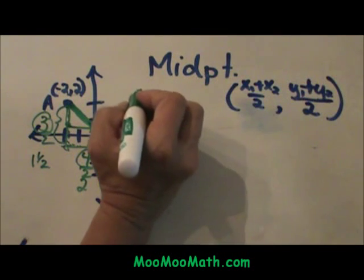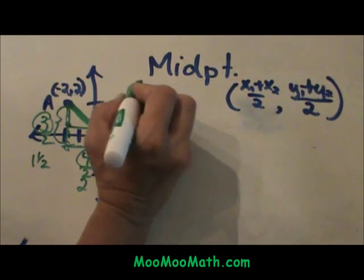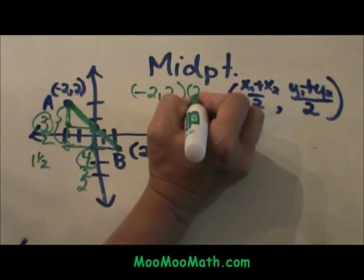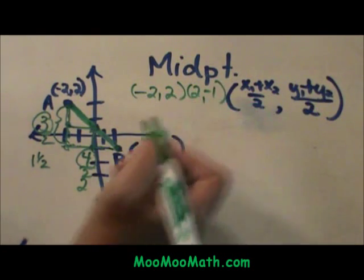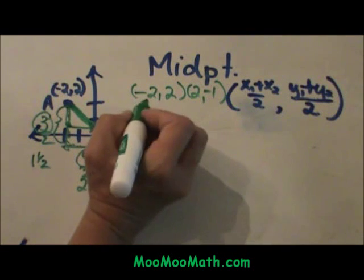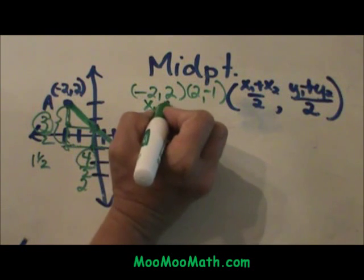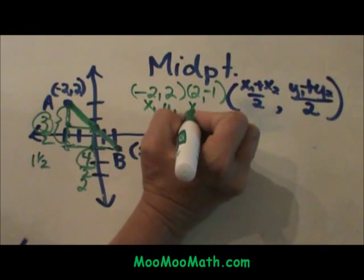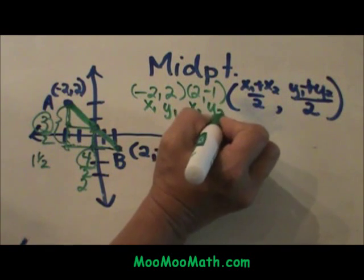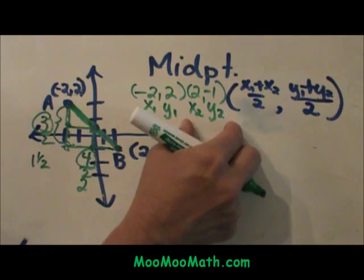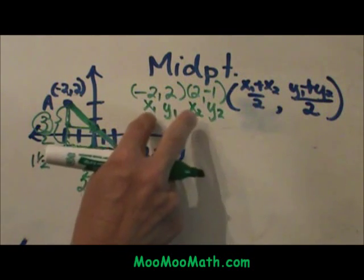I have the point and the point. I am going to take x1, y1, x2, y2. This is my first ordered pair. This is my second ordered pair. Then I am going to plug it into my formula.